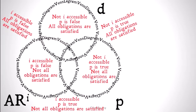And finally, in the overlap area between ARI and P, we have worlds that are I-accessible, P is true, and not all obligations are satisfied. And in the very center, we have worlds that are I-accessible, P is true, and all obligations are satisfied.